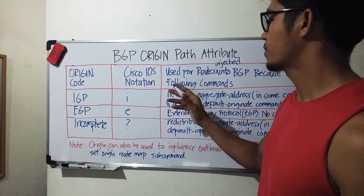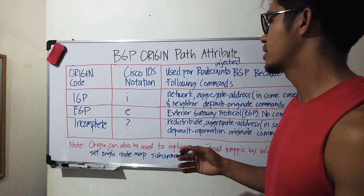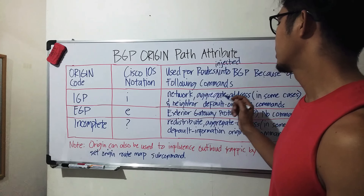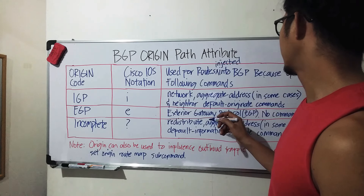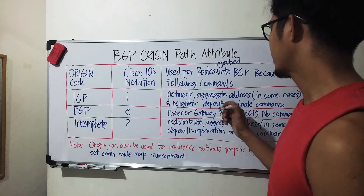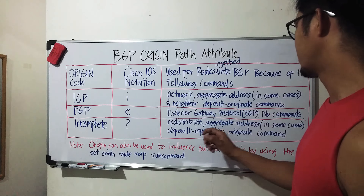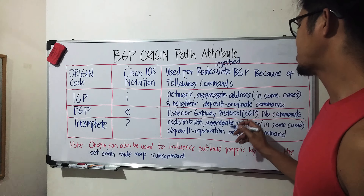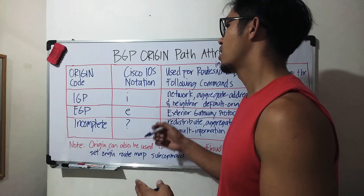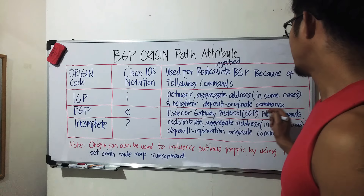When you see an 'i', that means that route is injected into BGP by using the network command, aggregate address in some cases, and the neighbor default-originate command. I'll probably make a video about default-originate and default-information-originate commands. As for EGP, like I said, it's a legacy Exterior Gateway Protocol, not being used nowadays, so there are no particular commands.